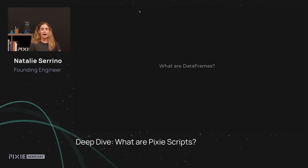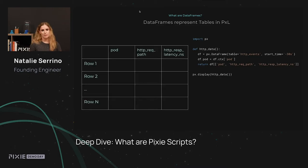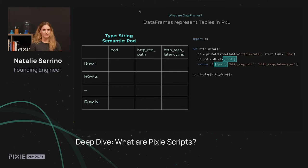Let's talk about how we represent data in Pixel, using a concept called dataframes. A dataframe is basically the Pixel version of a table — a set of rows and columns where the columns are typed. In Pixel, we have a raw data type for a column, like string or int, but we also have what we call a semantic type. Semantic types tell you about a column's meaning, while the raw data type is used to make query execution more efficient. These types are propagated through your dataframes throughout the entire lifetime of your query.